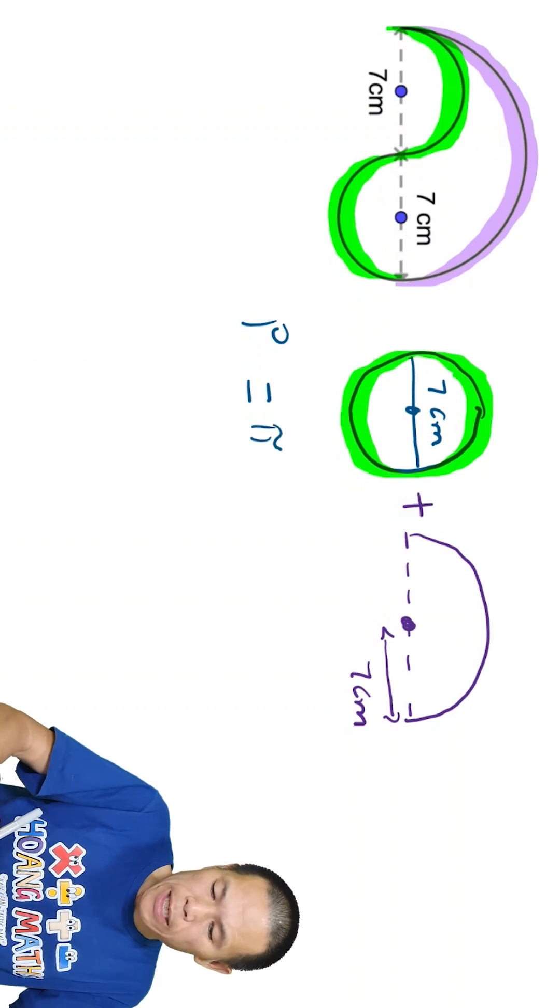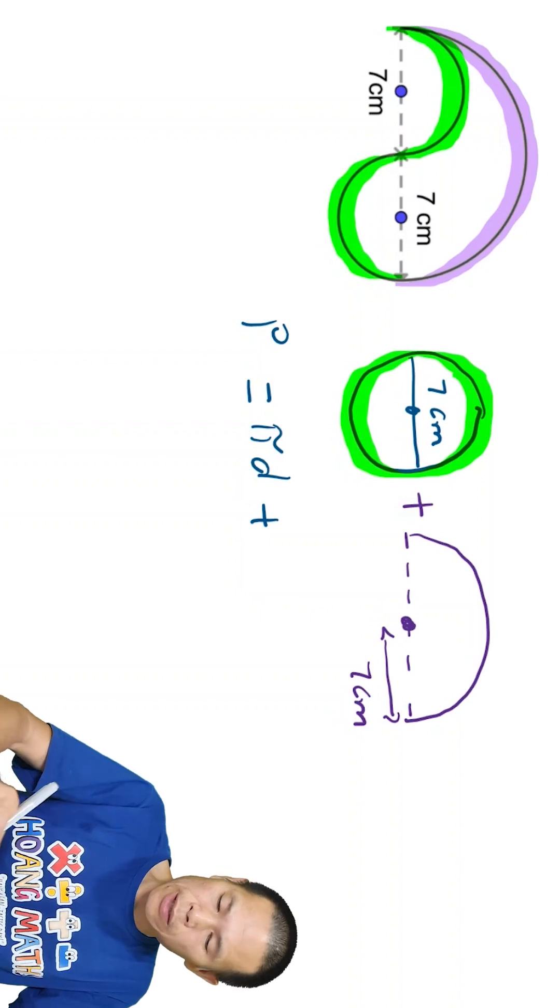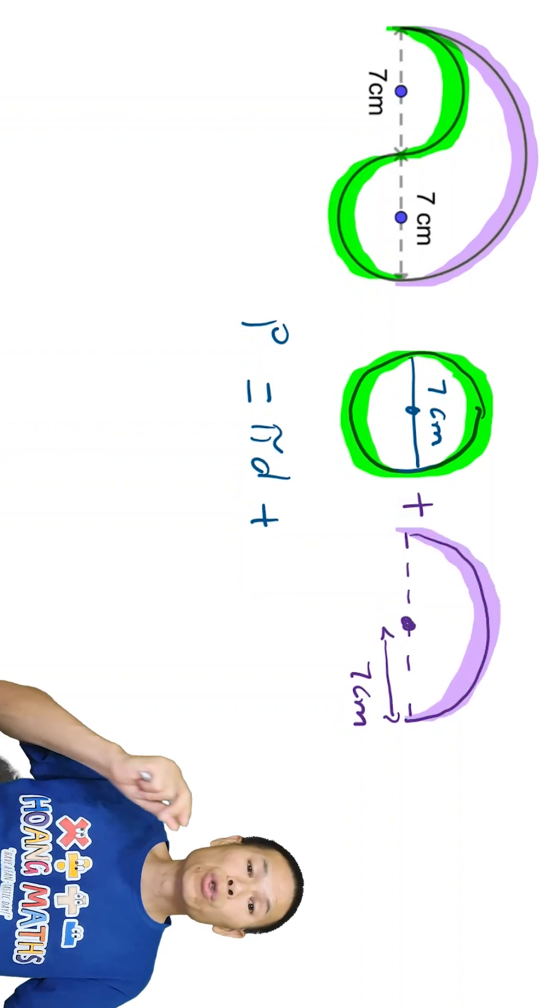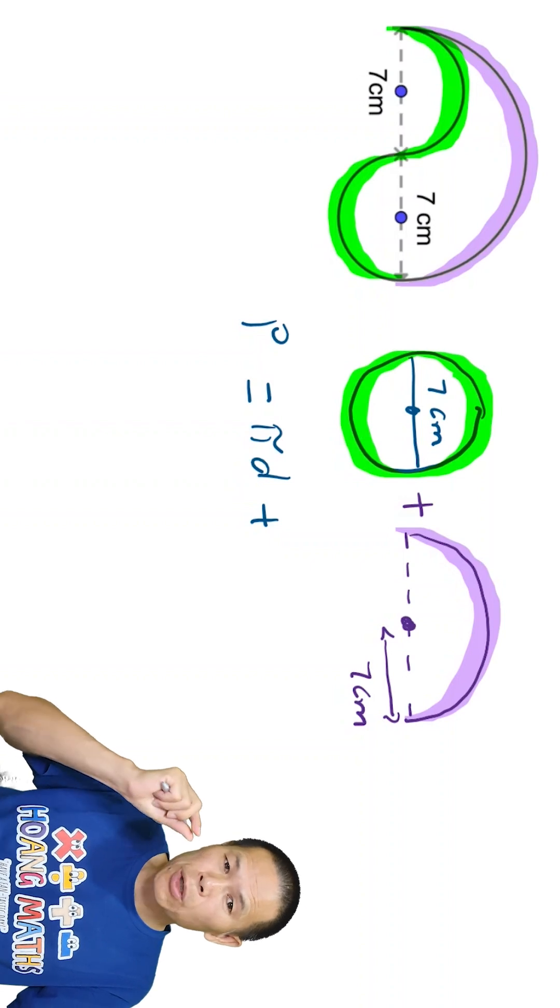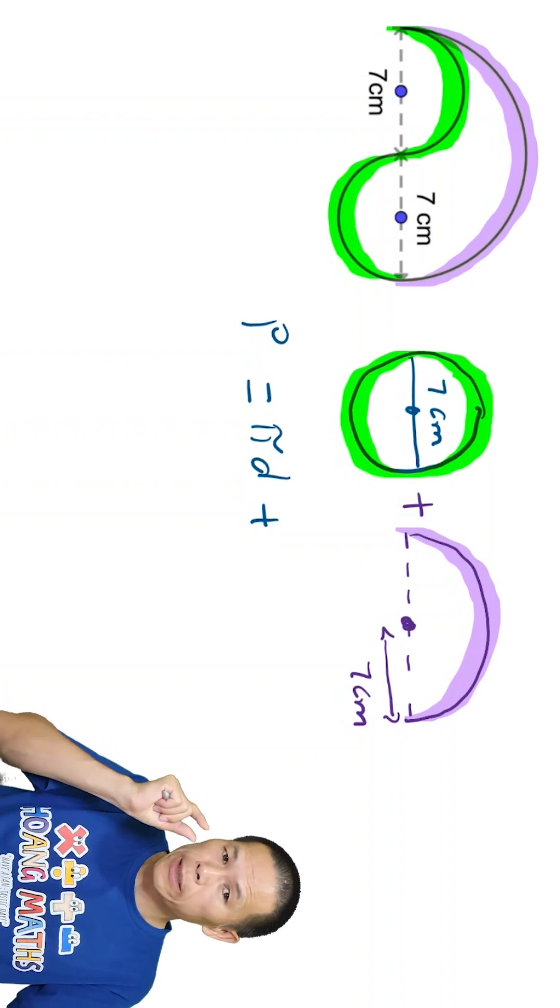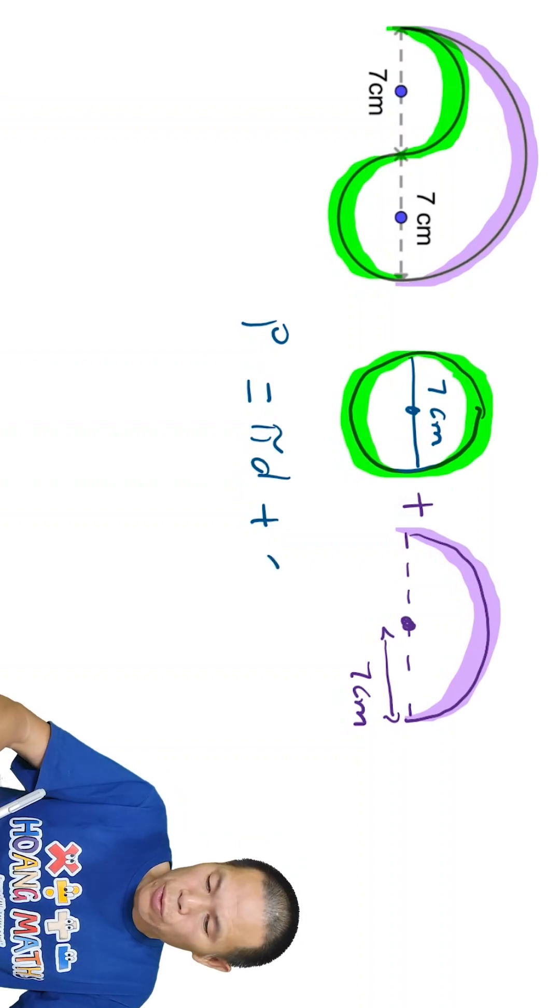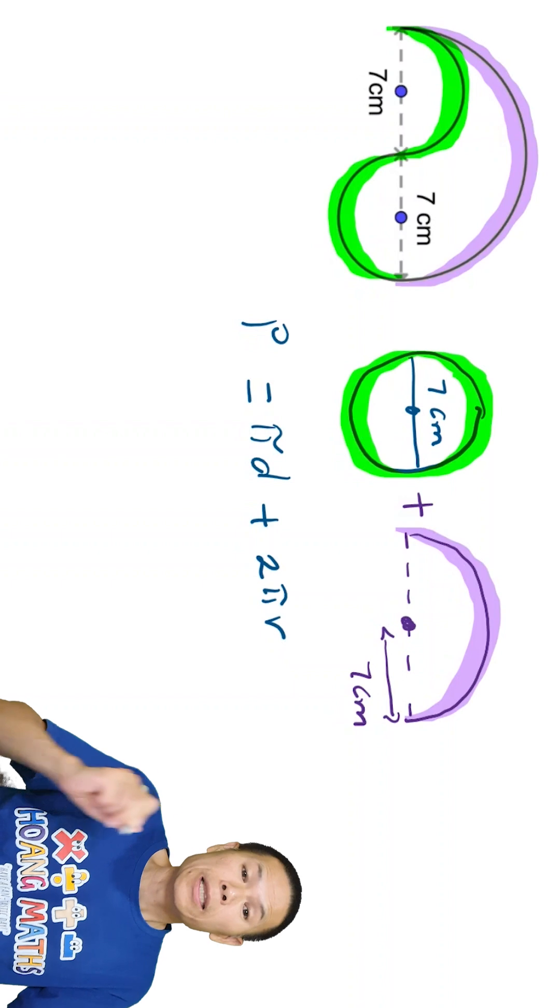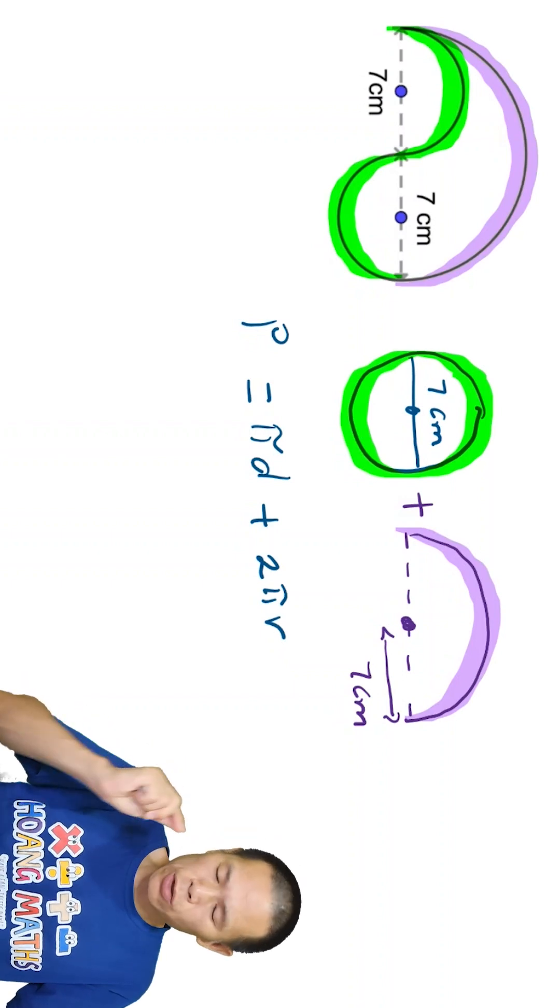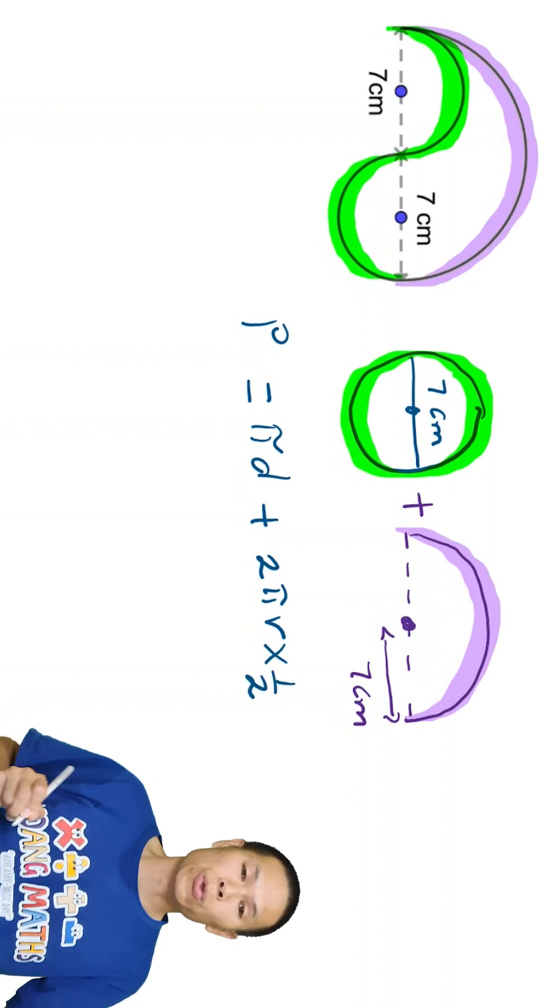So that means πd and then we add the circumference of this circle here is we use 2π times the radius because the radius is 7. Or you can write πd, but then d is 14, keep that in mind. So we just add 2πr, that will give us the whole circle. We only need half of it, so we just times a half. Or you can divide by 2.